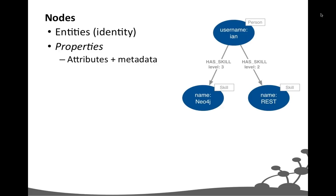In this simple diagram I've got three nodes: one representing a person and two representing skills. We can attach properties — key-value pairs — to each node. No two nodes need to share exactly the same set of properties. We use properties to represent entity attributes. For the person node we have a username property, and for the skills we have name properties. We can also use properties to capture metadata such as a version number or timestamps.